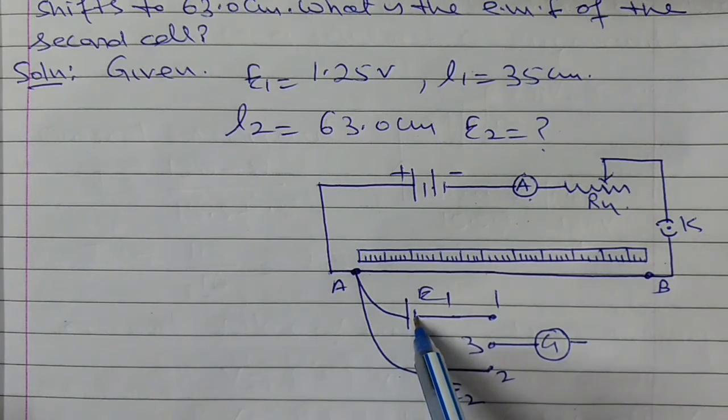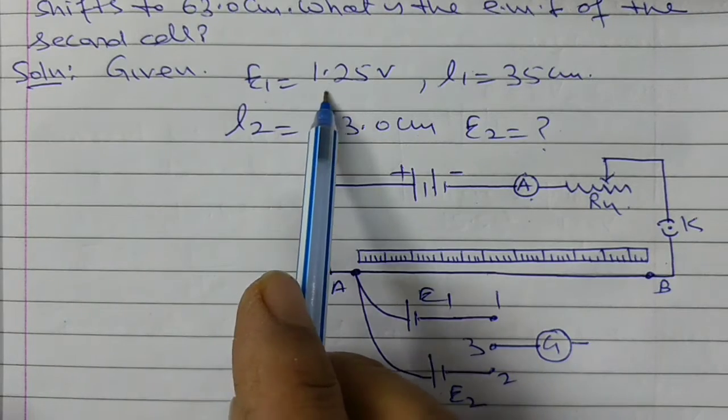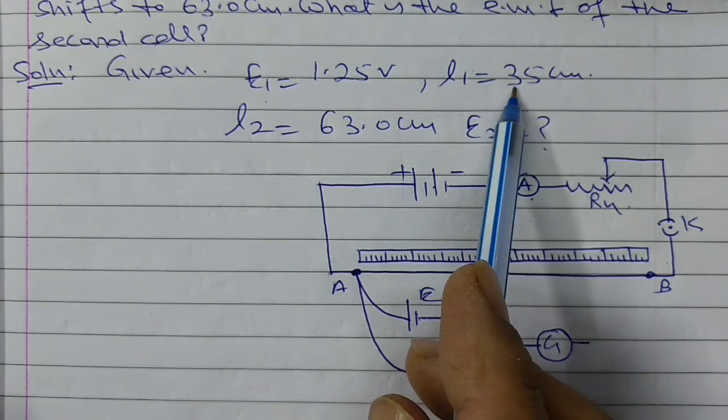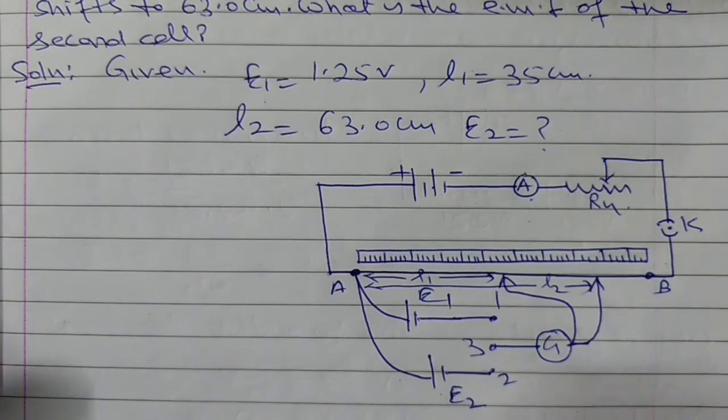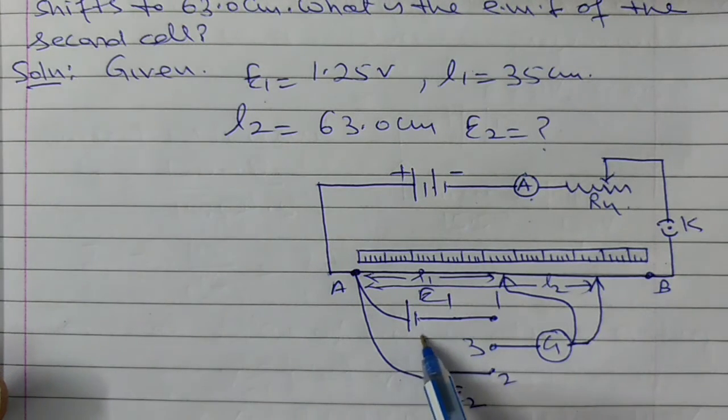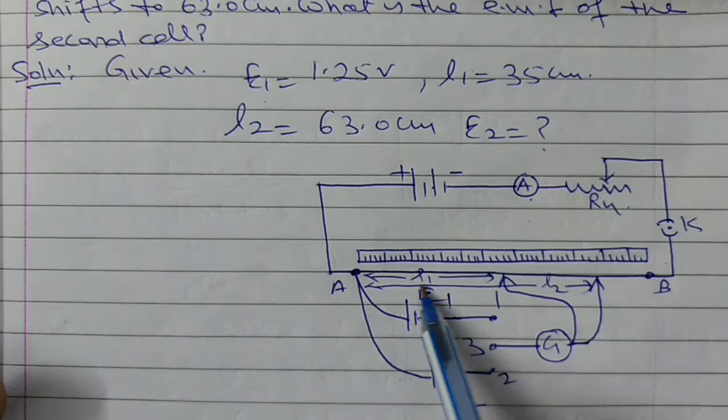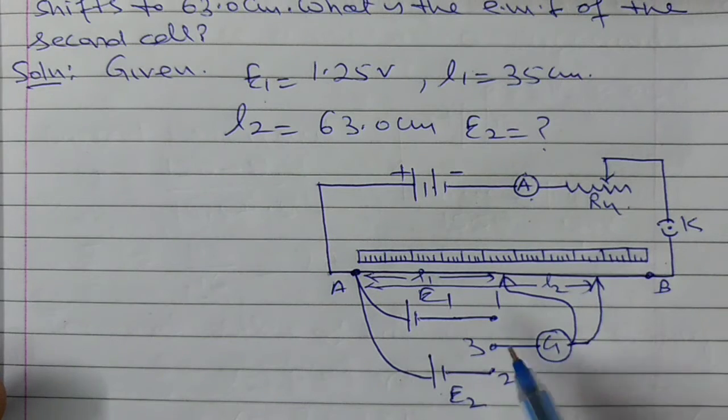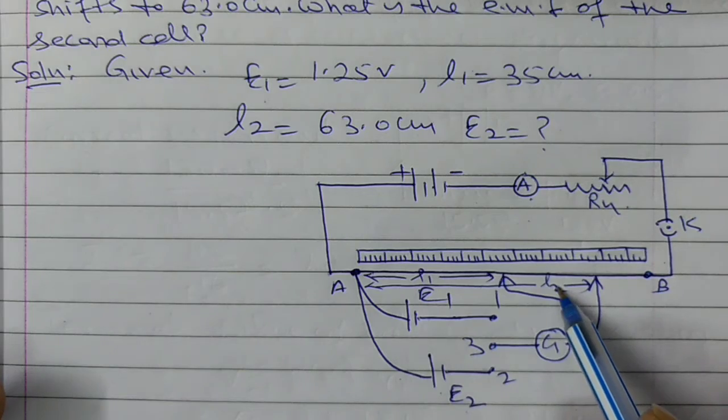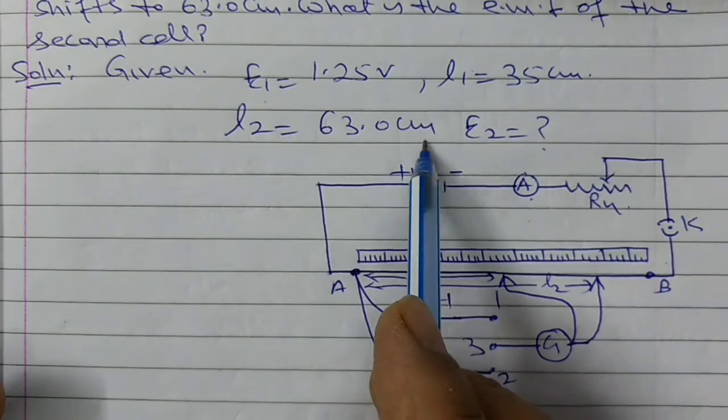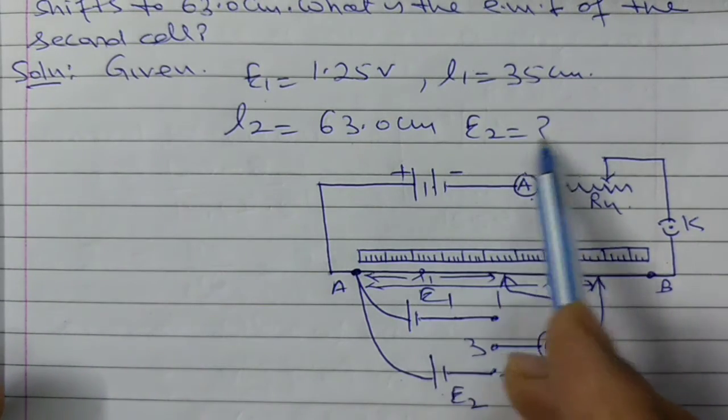When this cell is in circuit, the EMF of this cell is 1.25, the balancing length is 35 cm. So this balancing length L1 equals 35 cm. Here E2 is to be calculated.